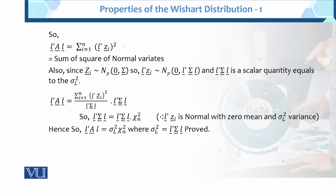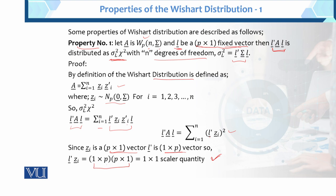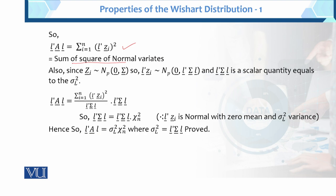Now, L'AL equals the sum of squares of a normal variate. In the univariate case, we know that the sum of Zi² divided by sigma² equals chi-square. So L'Zi is normal with mean zero and variance L'sigma L, which is a scalar quantity equal to sigma² of L.